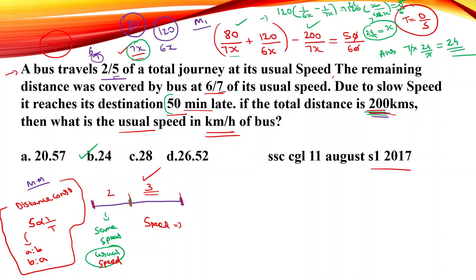Speed at 6/7 of the usual speed — so the speed ratio is 6 to 7 for the second part. Since speed and time are inversely proportional, the time ratio is 7 to 6. This distance is constant, so the extra time is the difference between the two time values — 7 units minus 6 units equals 1 extra unit of time.